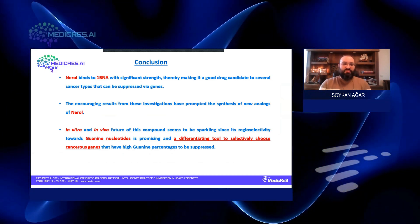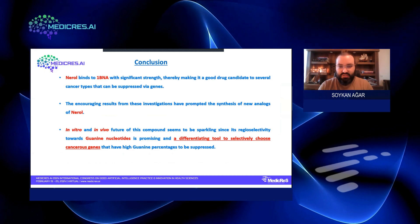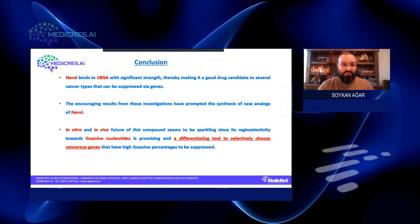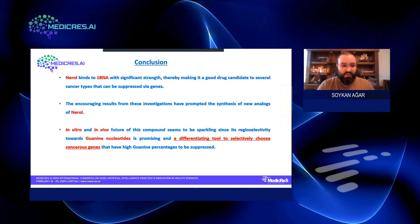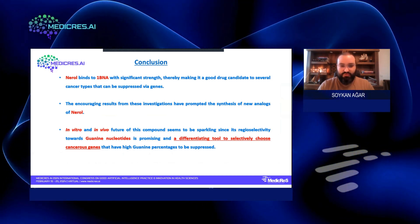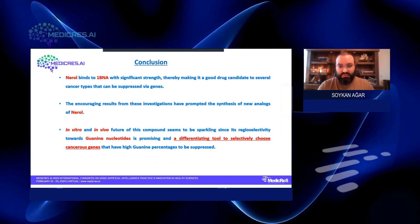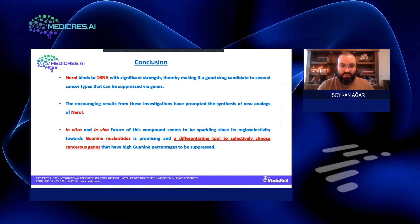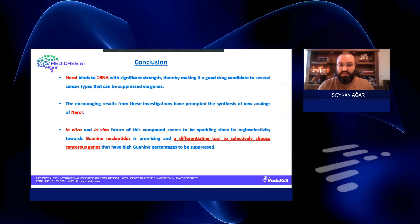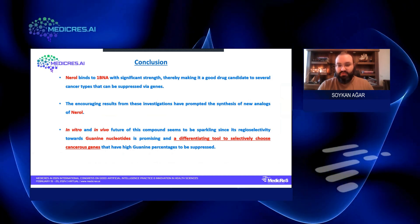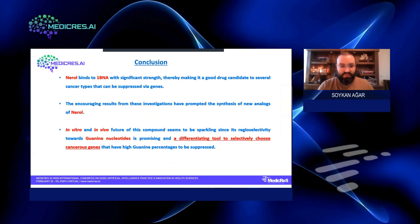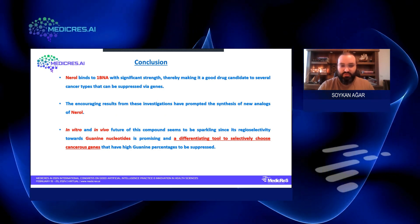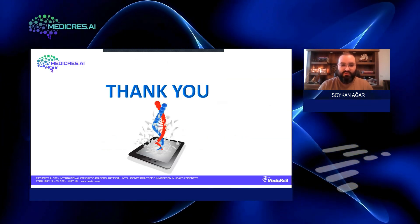The encouraging results from these investigations have prompted the synthesis of new analogs of Nerol. The in vitro and in vivo future of this compound seems sparkling, since its regioselectivity towards guanine nucleic acids is promising, and they are a differentiating tool to selectively choose cancerous genes that have high guanine percentages to be suppressed. Thank you very much.